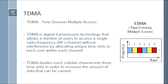TDMA is a digital transmission technology that allows a number of users to access a single radio frequency channel without interference by allocating unique time slots to each user within each channel. TDMA divides each cellular channel into three time slots in order to increase the amount of data that can be carried. In the picture of TDMA, we see the frequency axis and the time axis, with time divided into many portions.